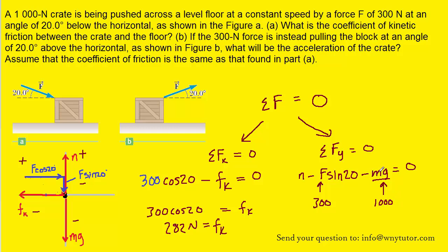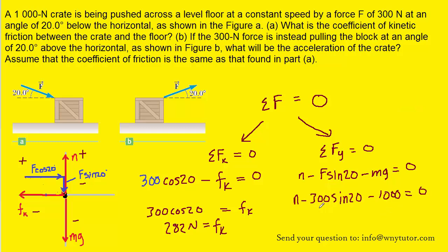Sometimes a question gives you the mass separately — for example, 10 kilograms — and then you'd have to multiply by g = 9.8. But in this case they've already done that work, so the value of mg entirely is 1,000 newtons. When you move the relevant terms to the other side, you should calculate a normal force of approximately 1,102 newtons.